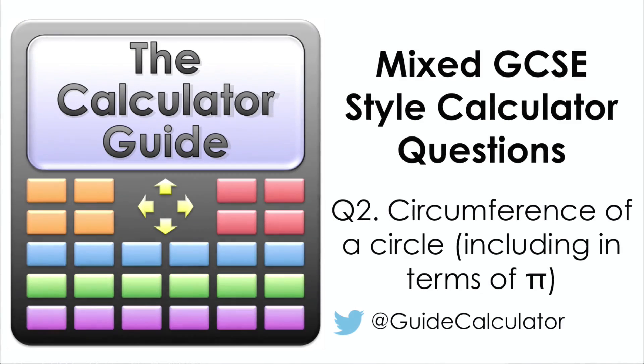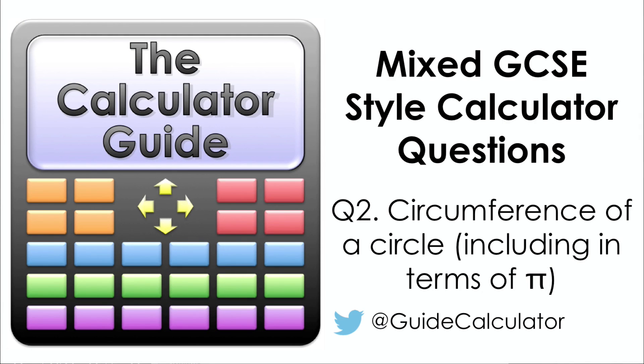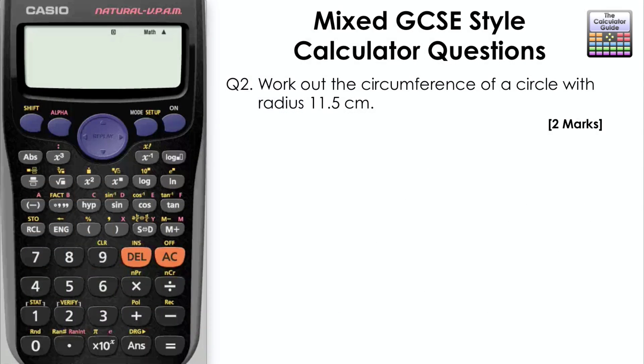Question 2. Circumference of a circle, including in terms of pi. Work out the circumference of a circle with radius 11.5 centimeters.